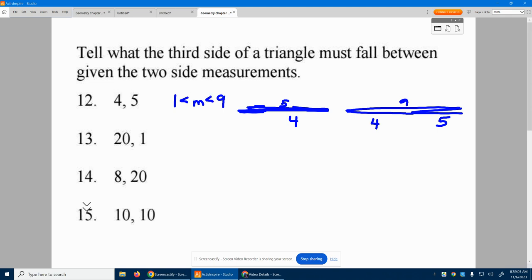It cannot equal one or nine or else they'd be flat lines. So we simply subtract them to get the smallest it could be. Add them to get the largest it could be. And it's got to be between them. Can't equal those measurements. But that's how we do it.